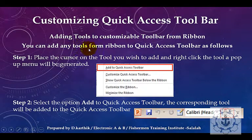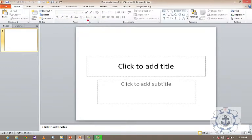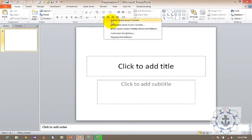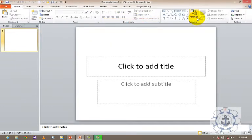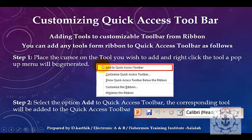There is one more way to add tools to the Quick Access Toolbar from the ribbon. For example, right-click a tool on the ribbon. Here is the option: 'Add to Quick Access Toolbar.' Click it. Similarly, right-click any tool and select 'Add to Quick Access Toolbar.' All the tools you customize will be added to the Quick Access Toolbar. Step 1: Place the cursor on the tool you wish to add and right-click it — a pop-up menu will be generated. Select the option 'Add to Quick Access Toolbar.' The corresponding tool will be added.